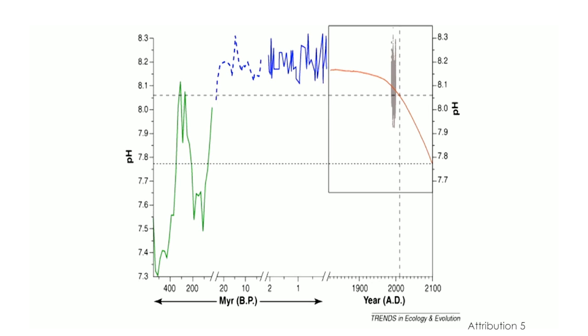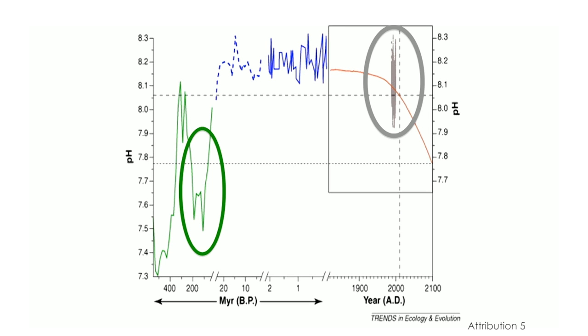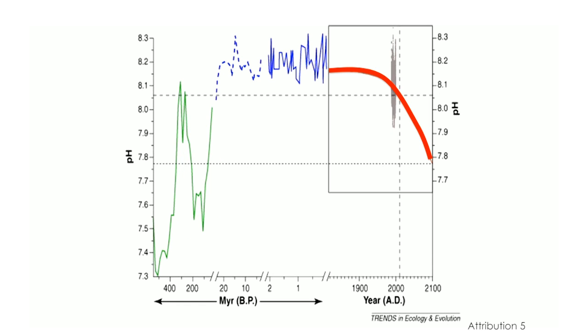Studies of past ocean pH are also giving us some interesting insights. Ocean pH has been stable for a long time, but there have been periods in Earth's history when it was lower than today. This figure pulls together our understanding of how ocean pH has varied over the past 400 million years. The green and blue lines are from the past, with decreases due to high CO2 levels in earlier atmospheres. The red line shows where we are headed if we continue on the current carbon dioxide emission trajectory.